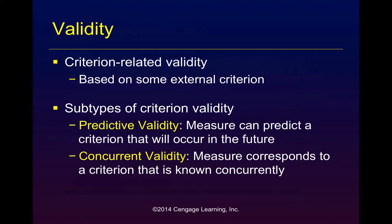Criterion validity is the type of validity where an instrument has been tested on a known population. For example, the Minnesota Multiphasic Personality Inventory, the MMPI, was first developed using face validity and content validity, but then it was administered to people who had been clinically diagnosed with a full range of disorders. Therefore, the sections that determine alcoholism or paranoia in the MMPI are said to have criterion validity.